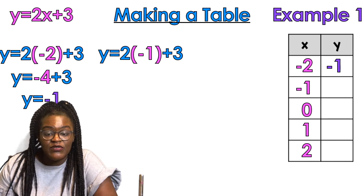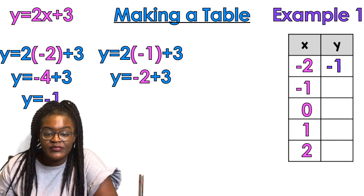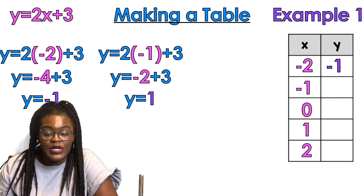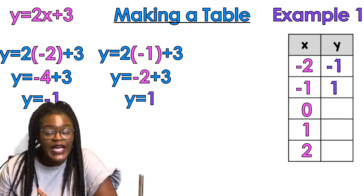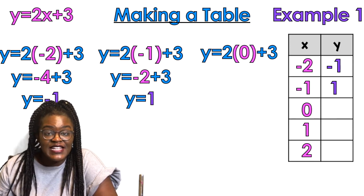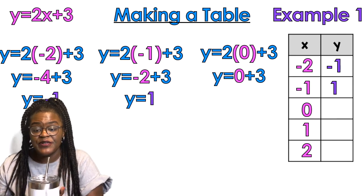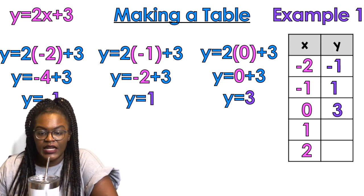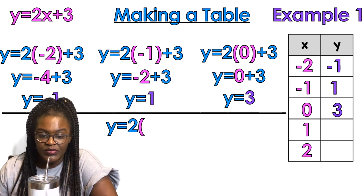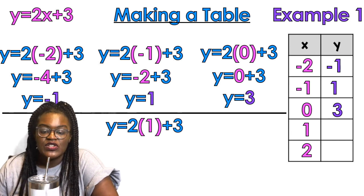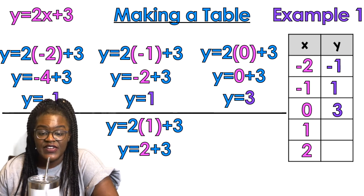I'm going to do the same thing for the next x values. Negative one goes in: two times negative one equals negative two, plus three, y equals one. So next to negative one in the table we put one. Then y equals two times zero — two times zero is zero — plus three equals three. So zero goes with three. Then y equals two times one: two times one is two, two plus three is five.